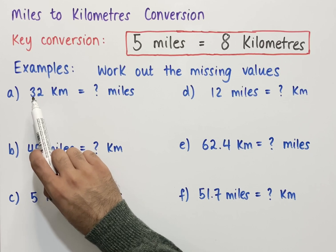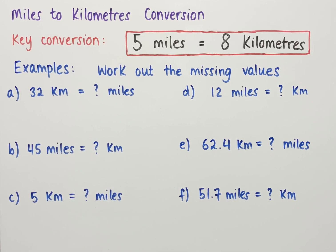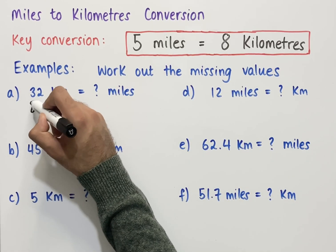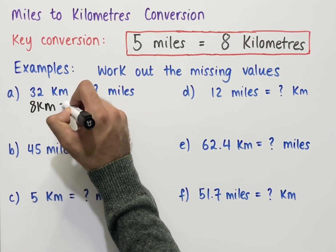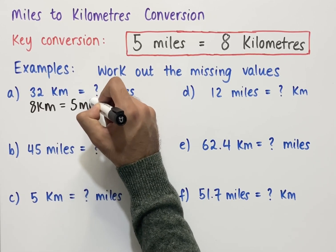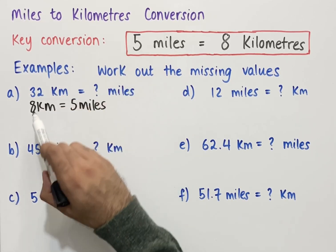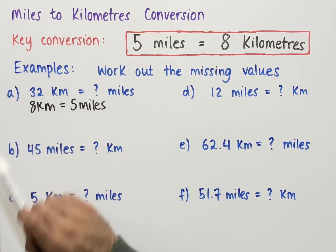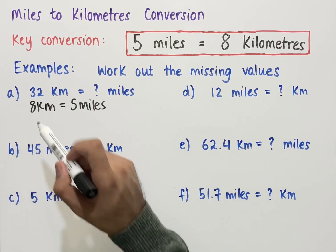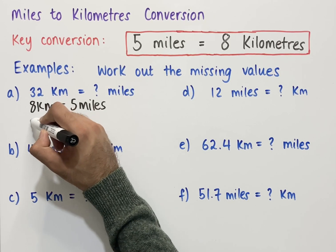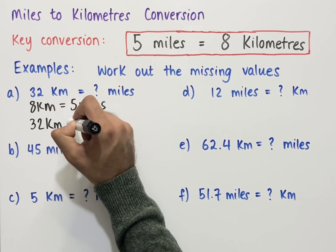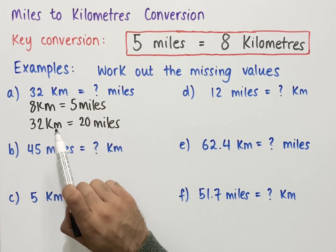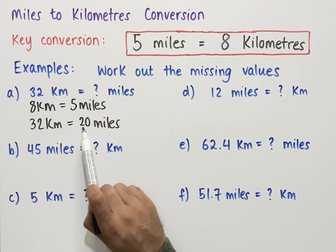Example A is converting 32 kilometers into miles. We start with the conversion: 8 kilometers equals 5 miles. Then we check whether we can multiply 8 kilometers to get 32 kilometers easily. Since 8 times 4 gives us 32, we multiply both sides by 4. So 5 miles times 4 gives us 20 miles. Therefore, 32 kilometers equals 20 miles.